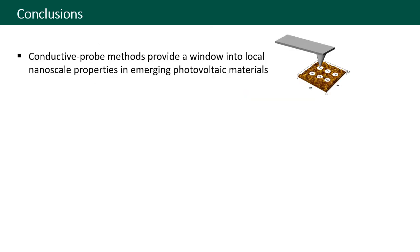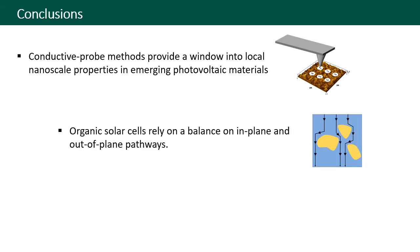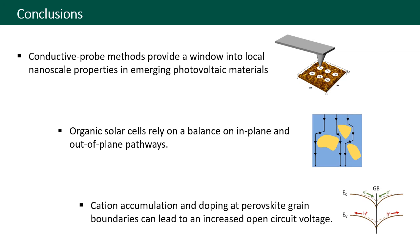In summary, we used newly developed conductive probe methods to assess the nanoscale functional properties of emerging photovoltaic materials. In organic solar cells, charge percolation relies on a balance of in-plane and out-of-plane charge transport channels, which challenges the conventional wisdom that face-on molecular stacking should be maximized. We also saw that an elevated open circuit voltage at grain boundaries in methylammonium lead iodide perovskite solar cells can be related to preferential n-type doping and cation accumulation at grain boundaries.